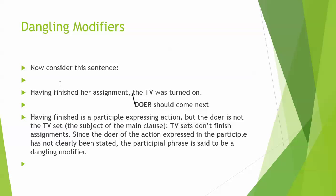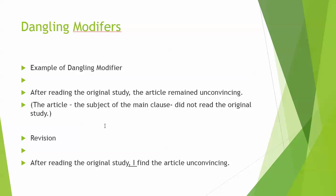In the next sentence, though: 'Having finished her assignment, the TV was turned on.' The next word after the modifier should be the doer of the action — it should be Mary. Instead, we have 'the TV.' The TV could in no way have finished Mary's assignment. So we have a misplaced modifier. TV sets can't finish assignments, so we have to correct it by putting Mary next to the modifier.